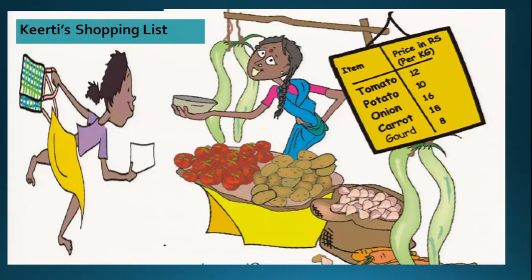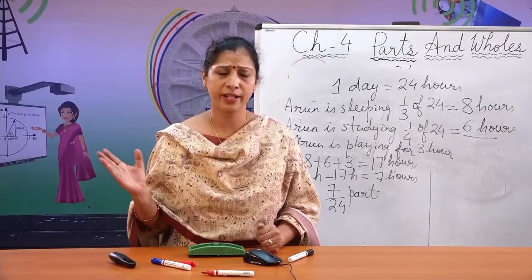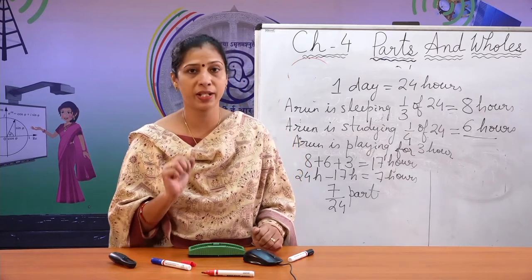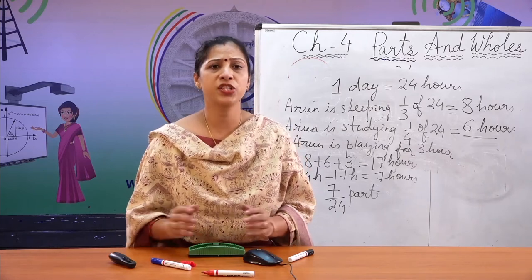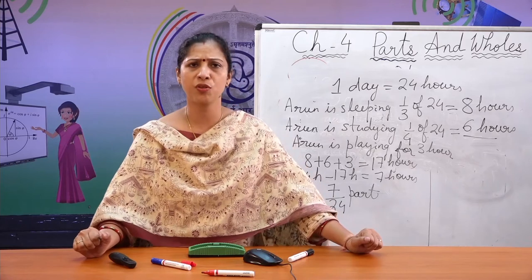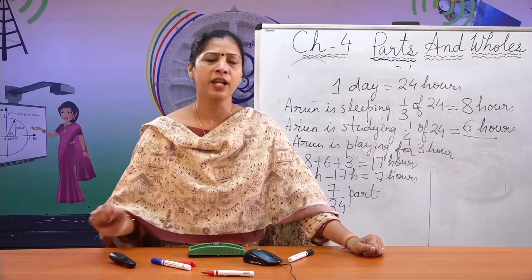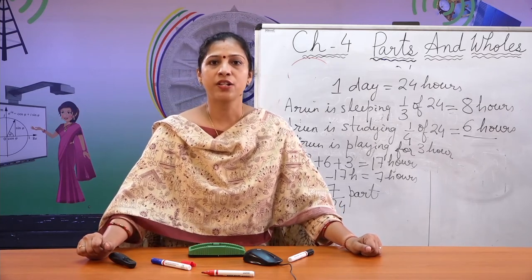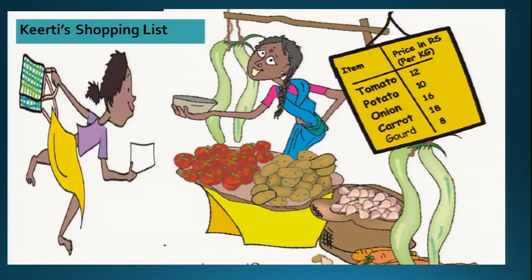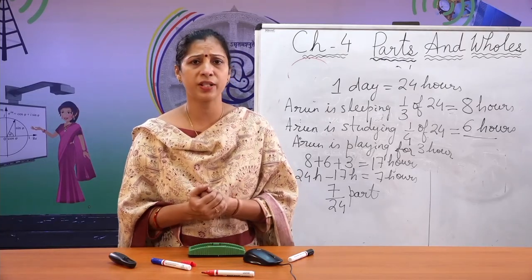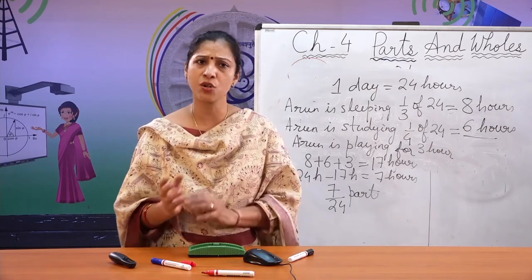Keerti is a very good girl who listens to her mother. One day her mother gave her a shopping list and asked her to get some vegetables from the market. Keerti went to Chinnamma's shop. Now Chinnamma has vegetables at different prices: tomato is 12 rupees per kilo, potato is 10 rupees per kilo, onion is 16 rupees per kilo, carrot is 18 rupees per kilo, and gourd is 8 rupees per kilo.